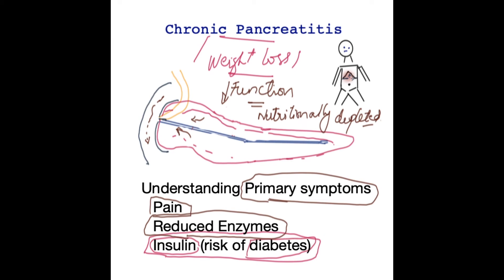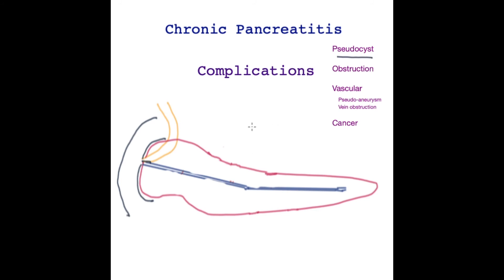Looking at complications of chronic pancreatitis: pseudocysts are cysts that develop in the pancreas filled with pancreatic juice or fluid, and they have scar tissue forming their wall. They may be asymptomatic but can cause pain, bleeding, and symptoms due to pressure on surrounding organs such as the small bowel or bile duct.